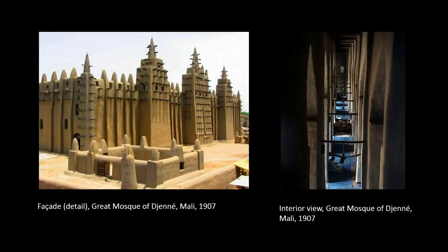During the annual festival of the Crépissage de la Grande Mosquée, the entire city contributes to the replastering of the mosque's exterior using a mud plaster made from butter and fine clay from the alluvial soil of the nearby Niger and Bani rivers. The men of the community mix the construction material, musicians entertain the laborers, women provide water for the mixture, and elders give advice from the terrace walls while young boys run and play everywhere. This communal care of the structure is an important ritual and community activity — a key theme of this architecture.